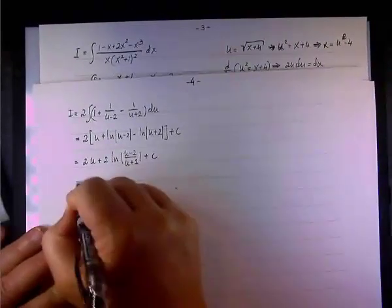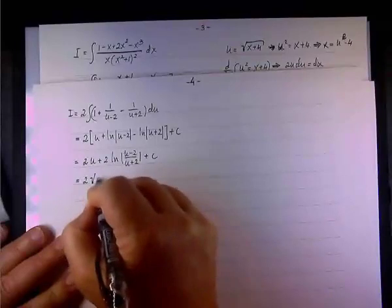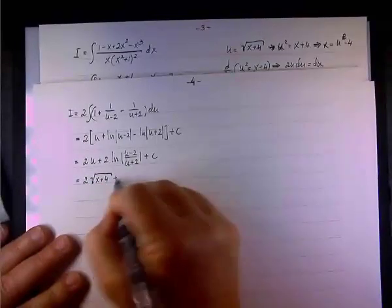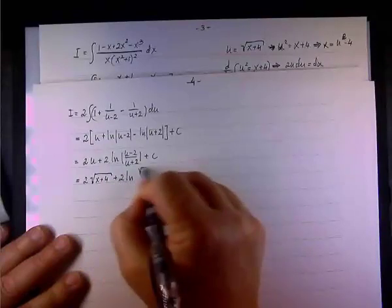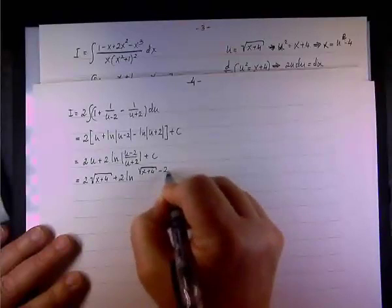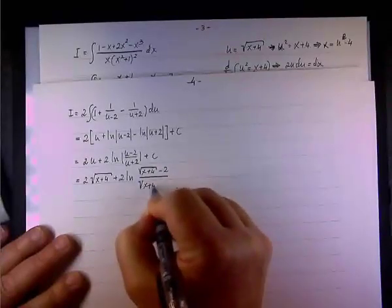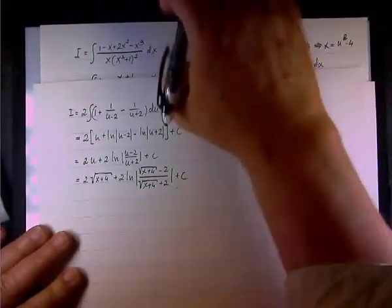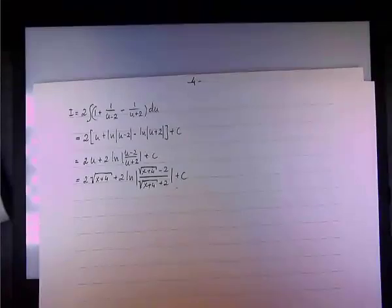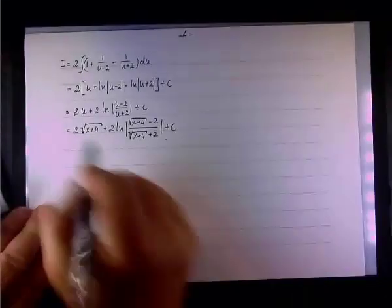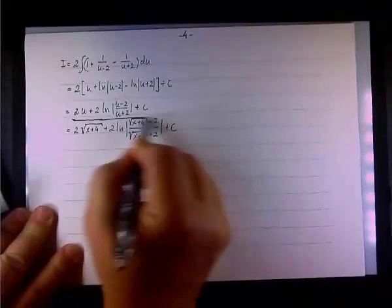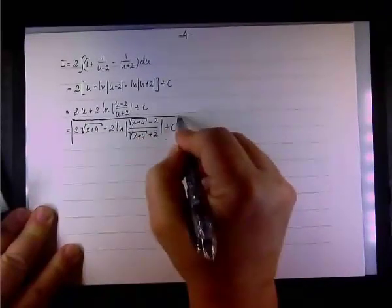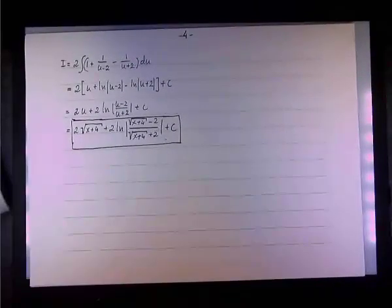And time to bring back x into this expression. So, remember, what was the substitution? The substitution was, u was equal to the square root of x plus 4. So, it will be 2 times the square root of x plus 4 plus 2 times the natural log of the square root of x plus 4 minus 2 over the square root of x plus 4 plus 2 plus c. That's it. This is the result.